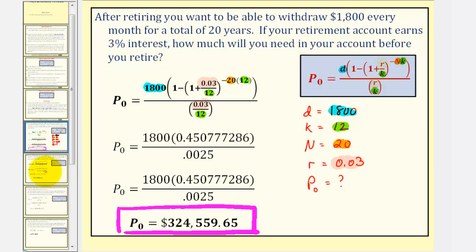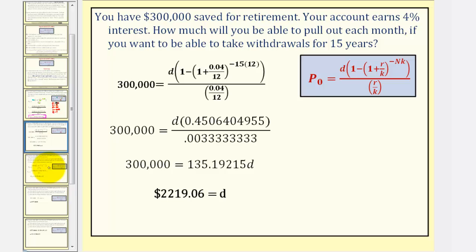Now let's take a look at a second example. Here you already know you have $300,000 saved for retirement. Your account earns 4% interest. You want to know how much you'll be able to pull out each month if you want to be able to take withdrawals for 15 years.